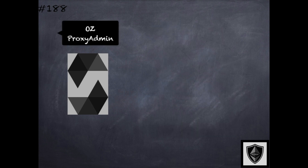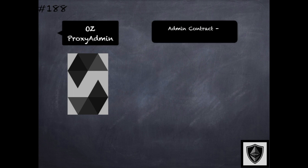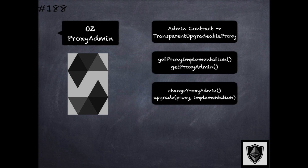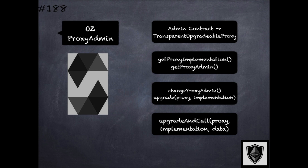The proxy admin library is meant to be used as the admin of the transparent upgradable proxy. It provides support for various admin functions including getProxyImplementation, which returns the implementation contract address; getProxyAdmin, which returns the admin address; changing the proxy admin; upgrading the implementation contract; and finally the upgrade-and-call function that both upgrades the implementation and makes a call to the new implementation.